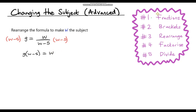On the left hand side we've got g multiplied by w minus 5 — I'll expand that in a moment. On the right hand side these two terms just cancel, so we're just left with w. We've dealt with the fraction. Now let's expand the brackets: g times w is gw, and g times negative 5 is negative 5g. On the right hand side we've just got w. Now we don't have any brackets.